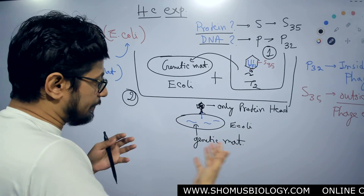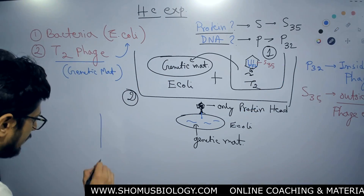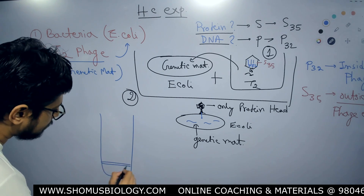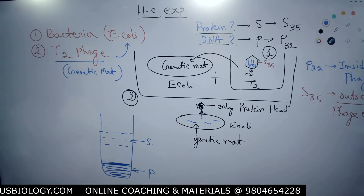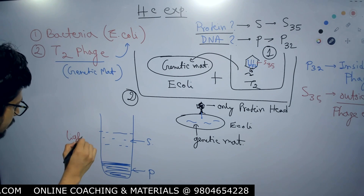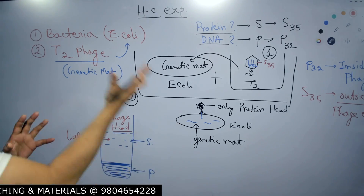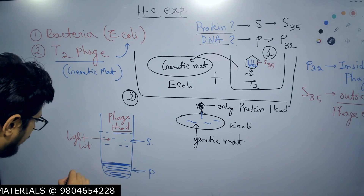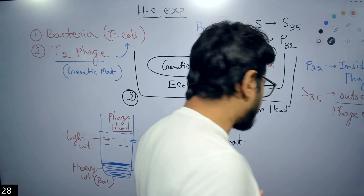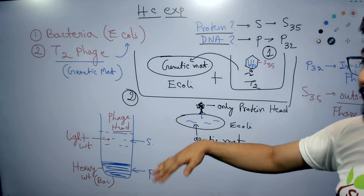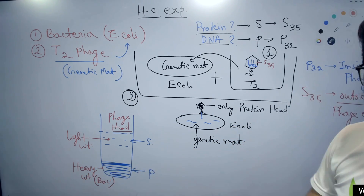After agitation they get separated. In the centrifugation tube we have a pellet and a supernatant. The supernatant is where lightweight objects are present — the phage head or coat proteins — which are light weight. The bacteria, E. coli, is bulky or bigger and is heavy. So after agitation and centrifugation, based on their weight and density, they get separated: the lightweight phage coat proteins are present in the supernatant and heavy E. coli cells are present in the pellet.